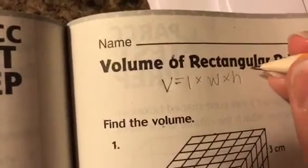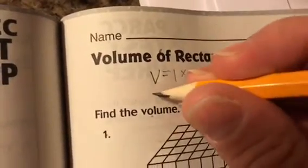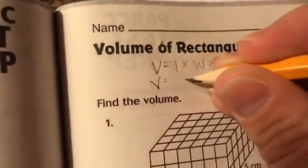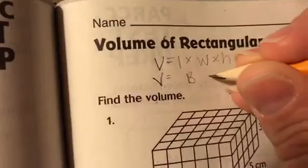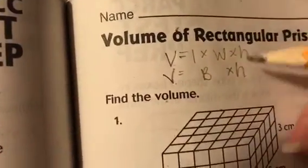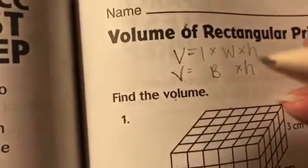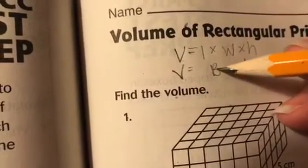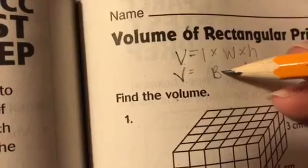The first one is that volume equals length times your width times your height. There's another formula which we're not going to get into much today, but I need you to be familiar with it: volume equals big B times H. So what you should notice is that the H's are both there, so therefore the B stands for your base.